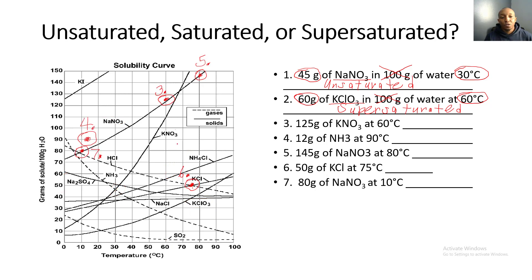For number three, we have KNO₃: 125 grams of KNO₃ at 60 degrees Celsius. The point is above the line for KNO₃, so it is supersaturated. For number four, 12 grams of NH₃ at 90 degrees Celsius — the plot for number four is above the line for NH₃, so it is also supersaturated.